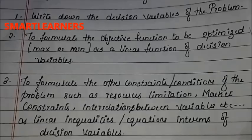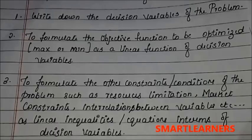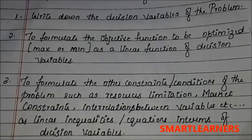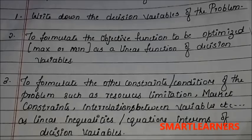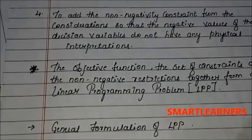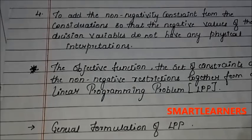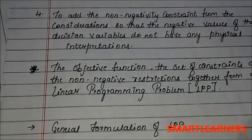Constraints include interrelationships between variables, expressed as linear inequalities or equations in terms of decision variables. So: first we write down the decision variables, second we decide whether to maximize or minimize the objective function, and third we write down all the constraints mentioned. Step four: add the non-negativity constraint so that negative values of decision variables do not have any physical interpretation. The objective function, set of constraints, and non-negativity restrictions together form a linear programming problem.